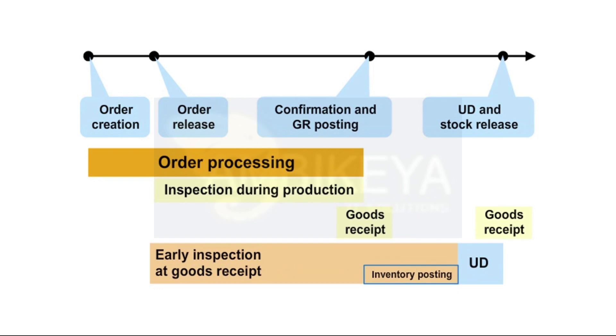One inspection lot is created for each combination of order, batch, and storage location. Once the goods have been received, the inspection lot becomes stock relevant and can be used to manage stock.